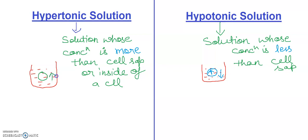In the hypertonic type of solution, the concentration inside the cell is less, and the concentration outside is more than the cell sap and inside the cell.